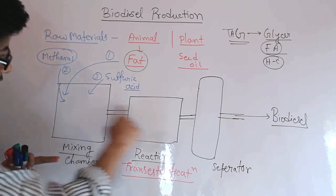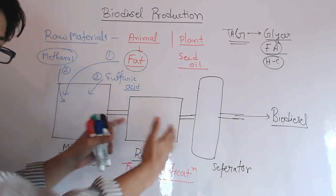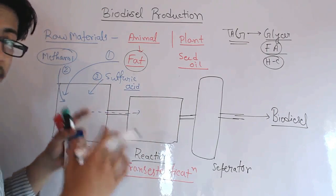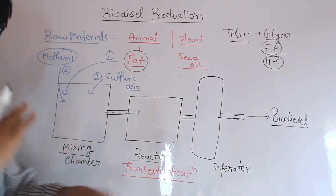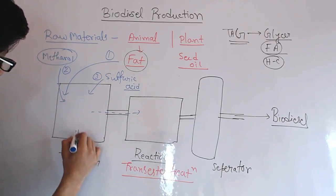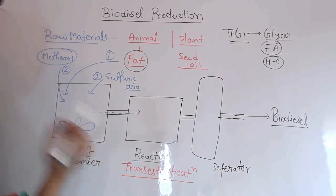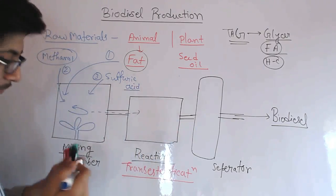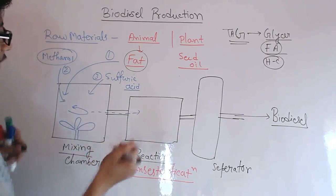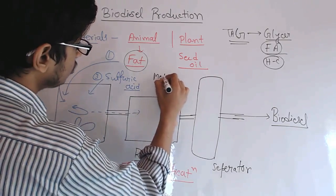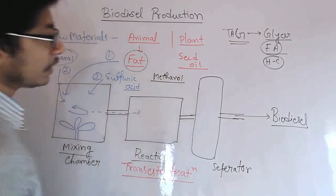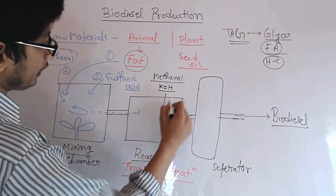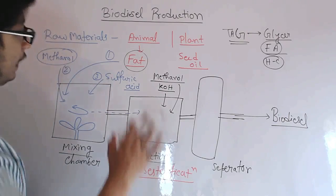Once the mixing is done, the mixed components are transferred to the reaction chamber — that is the second step. In the mixing chamber we use a blender, a paddle-like thing that rotates and mixes thoroughly. Then, inside the reactor, we add methanol along with the catalyst KOH together. In some reactions you will see that in the first mixing chamber they add only sulfuric acid and fat, without methanol.